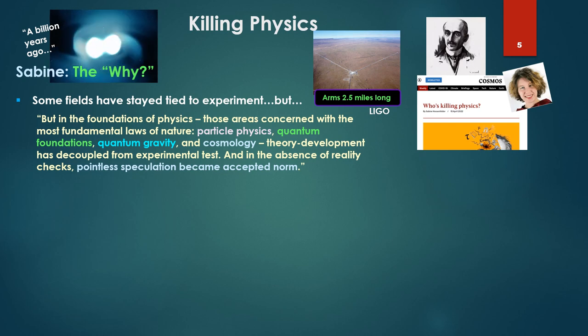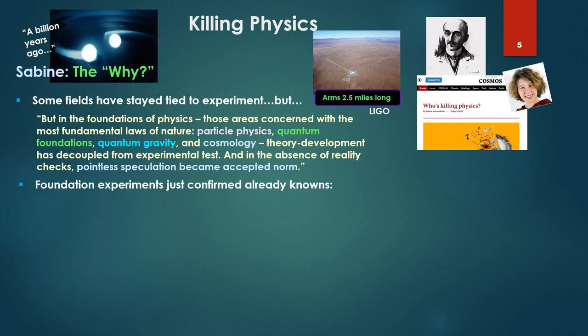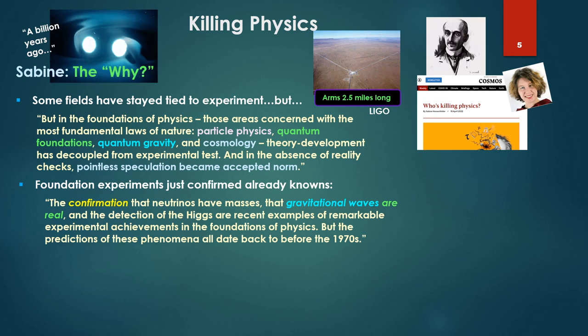Some fields have stayed tied to experiment. But in the foundations of physics, those areas concerned with the most fundamental laws of nature - particle physics, quantum foundations, quantum gravity and cosmology - there's some things missing here, like electromagnetism. Theory development has decoupled from experimental tests. In the absence of reality checks, pointless speculation became accepted norm. Foundation experiments just confirmed already knowns. The confirmation that neutrinos have masses, that gravitational waves are real, and the detection of the Higgs are recent examples of remarkable experimental achievements in the foundations of physics. But the predictions of these phenomena all date back to before the 1970s.